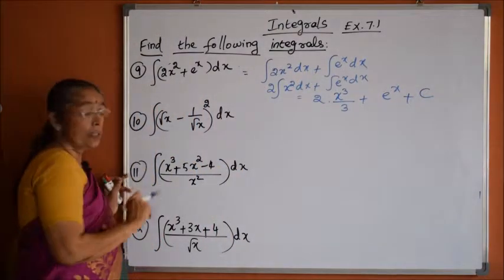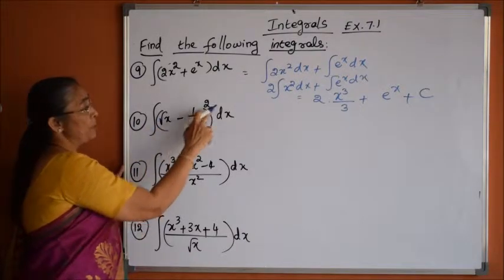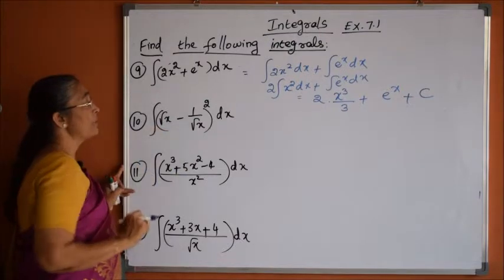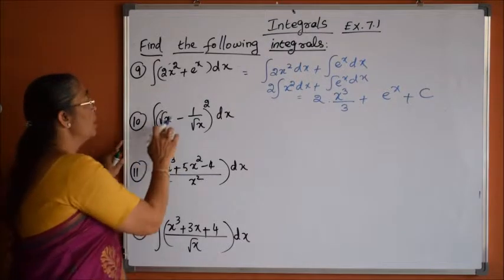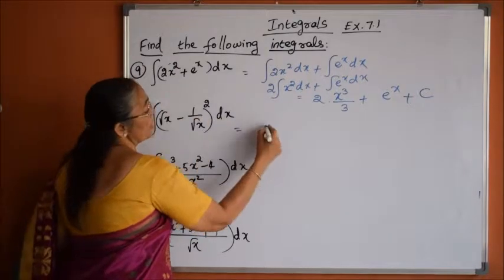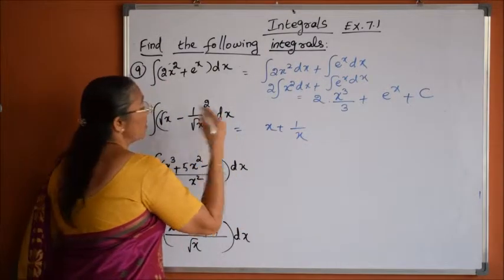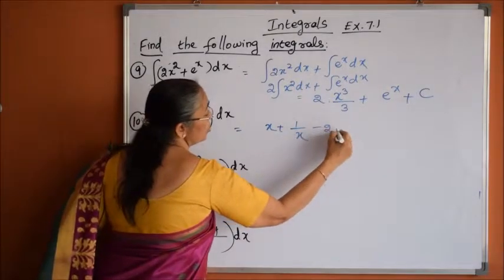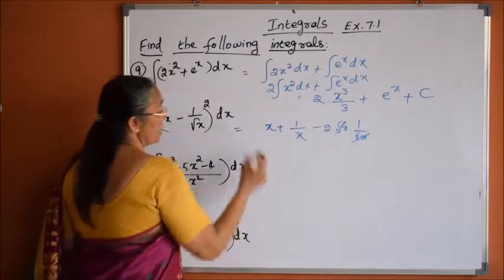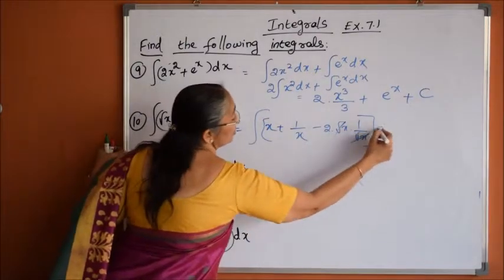Problem number 10: find the integration of (√x - 1/√x)² dx. First, expand this using the (a - b)² formula: a² is (√x)² which is x, plus b² which is 1/x, minus 2ab which is 2 times √x into 1/√x. The 2ab term gets cancelled.